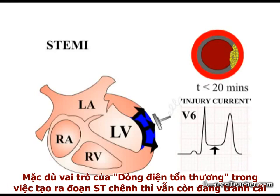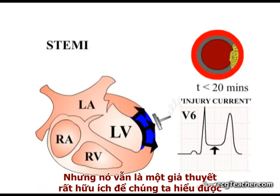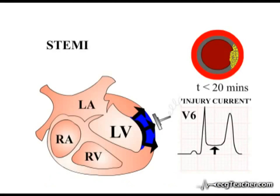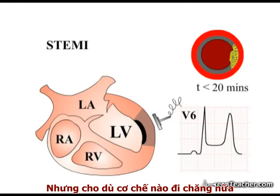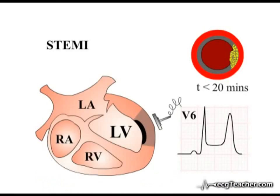Although the role of an injury current in generating ST elevation is controversial, it is a very useful concept when trying to understand the patterns of changes produced on the ECG by occlusion of different vessels. Whatever the mechanism generating the phenomenon, ST segment elevation on an ECG is the hallmark of evolving myocardial infarction secondary to complete occlusion of a coronary arterial vessel.